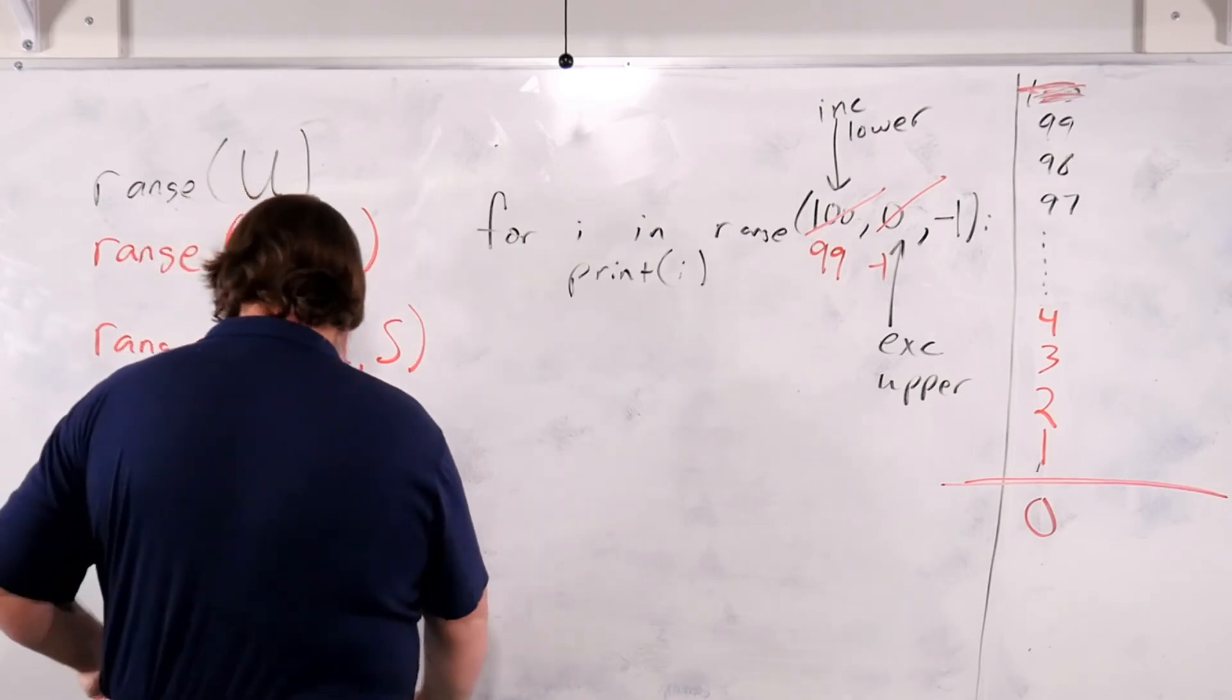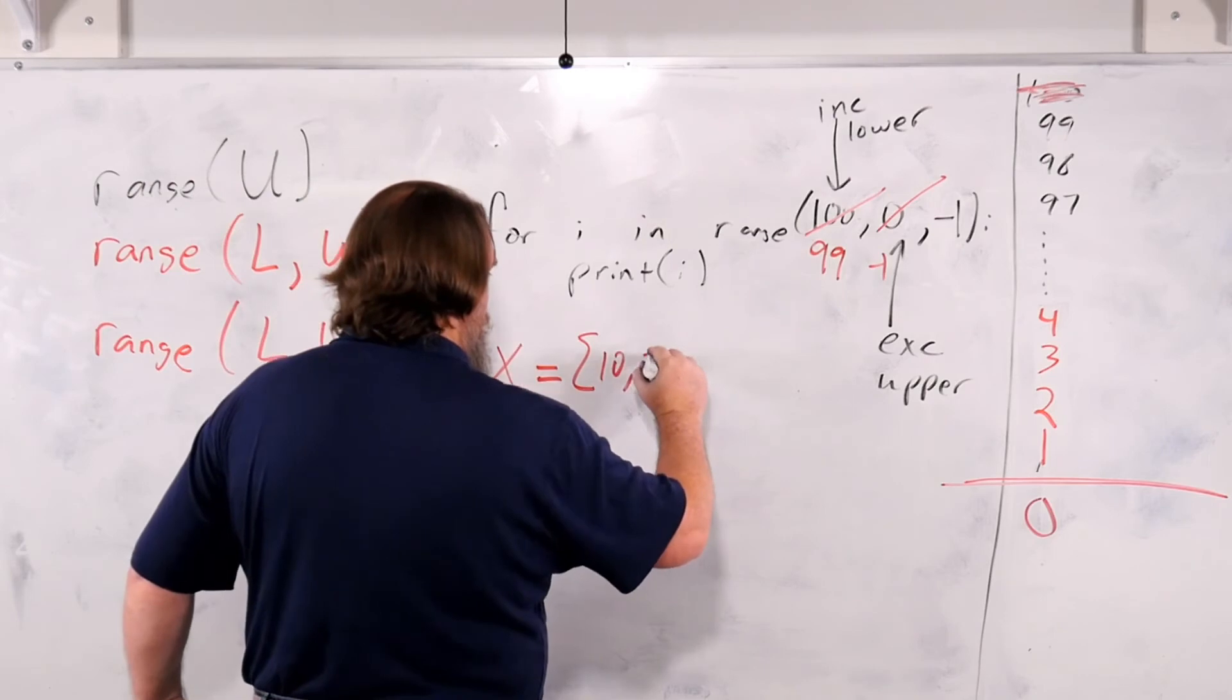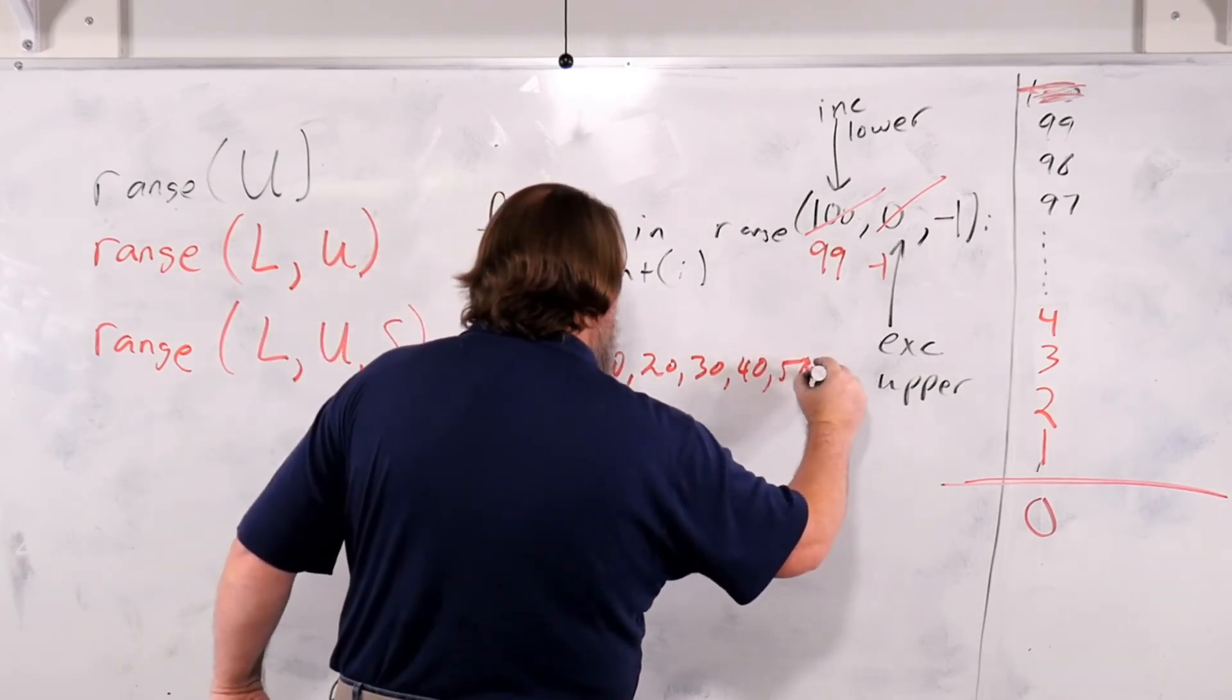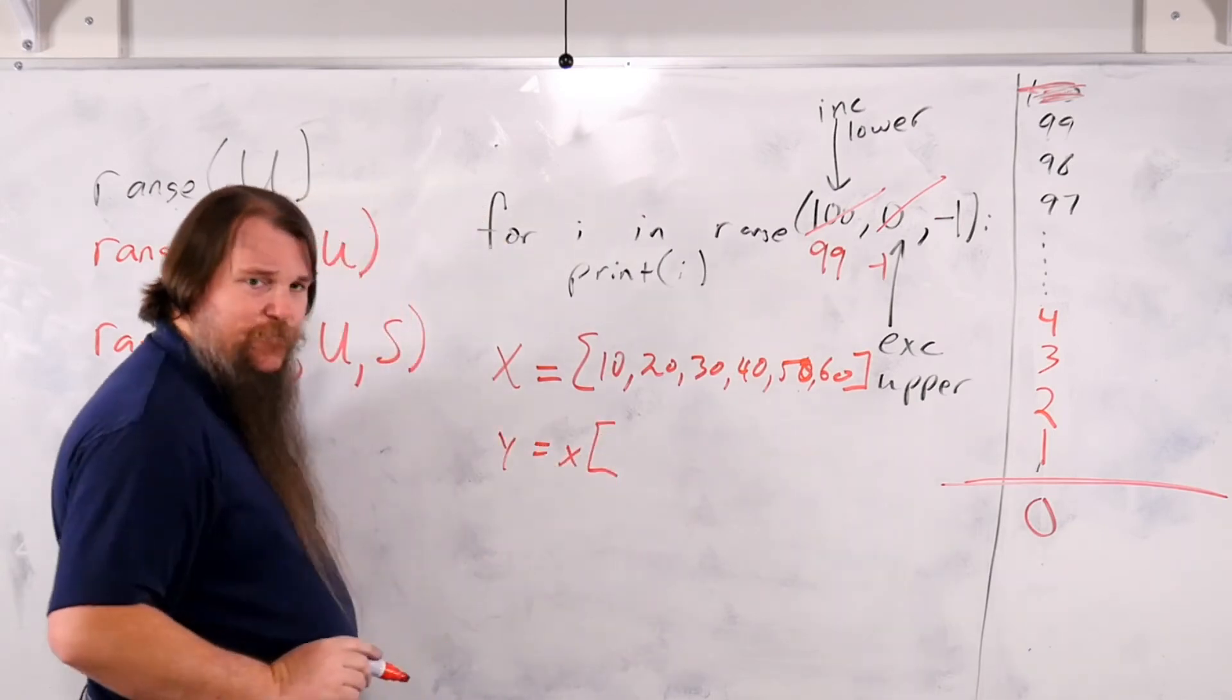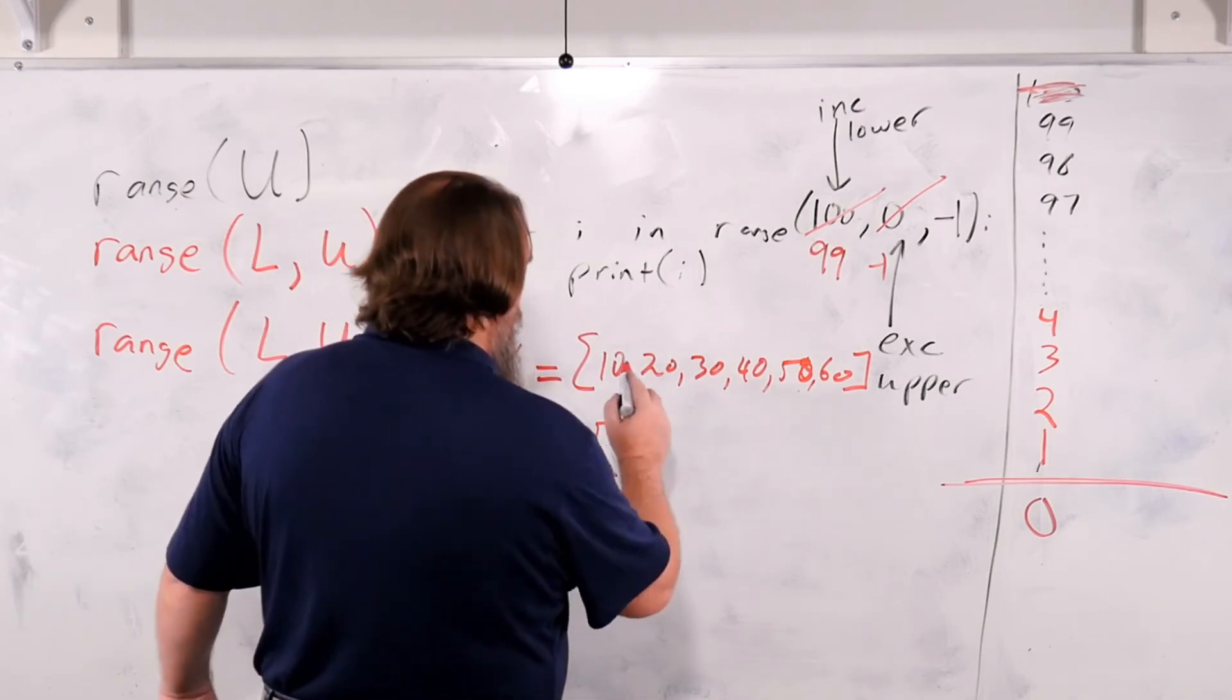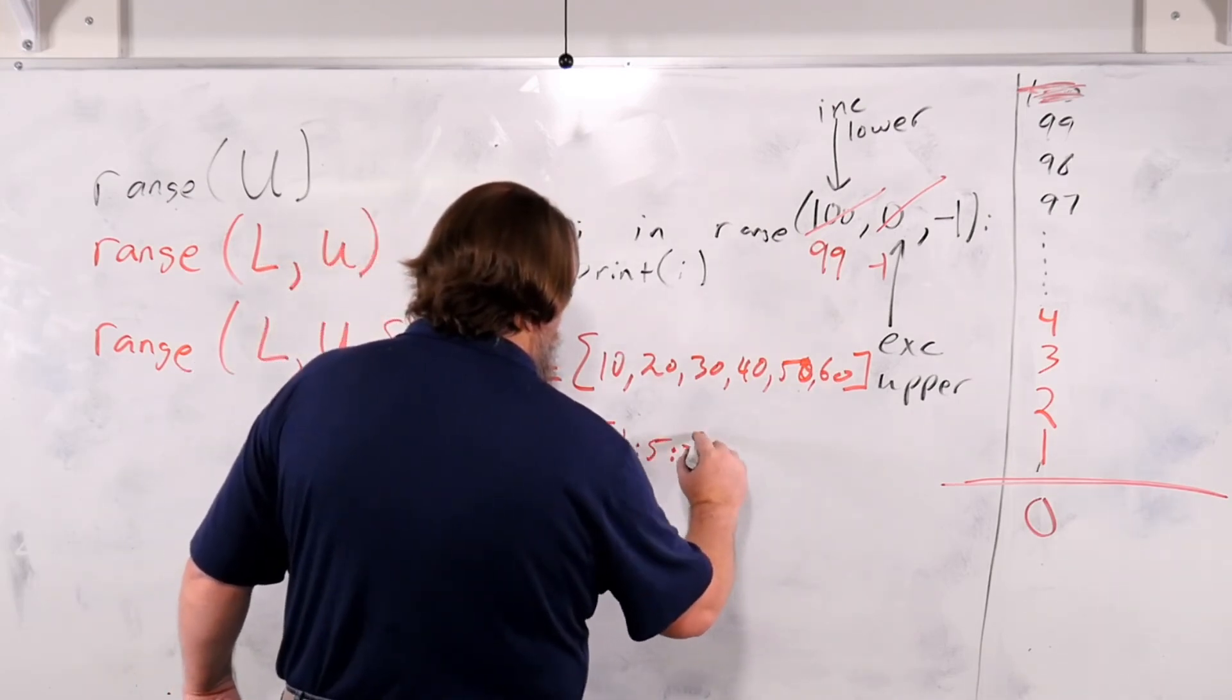Don't use this black. Got to refill that pen. X equals 10, 20, 30, 40, 50, 60. Y equals X. Slice from 1, 2, 1, 2, 3, 4, 5, 6. All right. We'll slice to 5, colon 2.